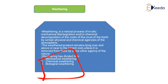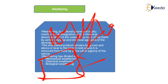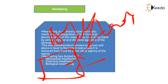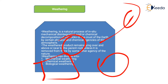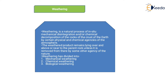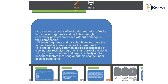The parent rock breaks due to the impact of agents, and the breaking fragments and their properties depend upon the agent. Weathering is classified into three types, and these fragments basically lie on or near the parent rock. Their final location depends upon which agent transports and deposits them. The three types of weathering are: mechanical weathering, chemical weathering, and biological weathering.